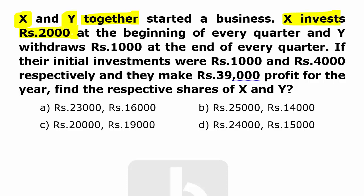X invests Rs.2000 at the beginning of every quarter, whereas Y withdraws Rs.1000 at the end of every quarter. Initially, X have made Rs.1000 investment whereas Y have made Rs.4000 as an investment.